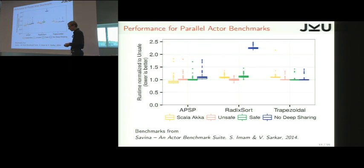On the other hand, if we didn't do the deep sharing optimization, so the one with the rectangle that we saw, then it would be more than two times slower.